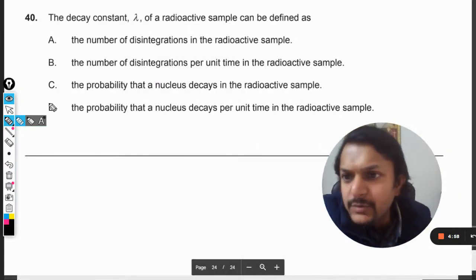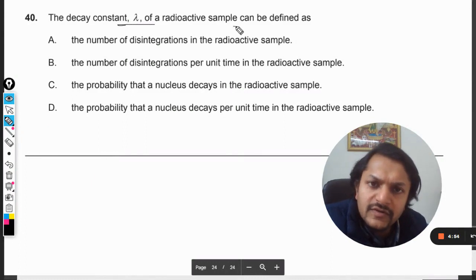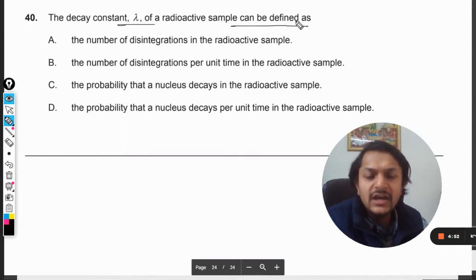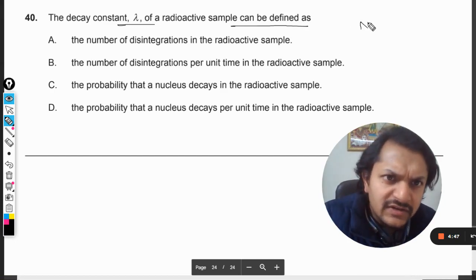Okay dear students, let us see what is there in this question. The decay constant lambda of a radioactive sample can be defined as... So they are just asking you the definition of that as per the radioactivity is concerned.